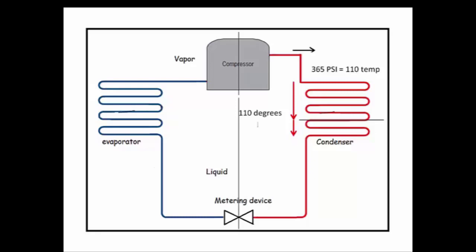Subcooling is a measurement of how much the liquid in the condenser cools down below its saturation point before exiting. When the hot gas in the condenser first turns to the liquid, its temperature is at its saturation point. This means that the temperature of the liquid is at the same temperature at which the refrigerant is condensing.